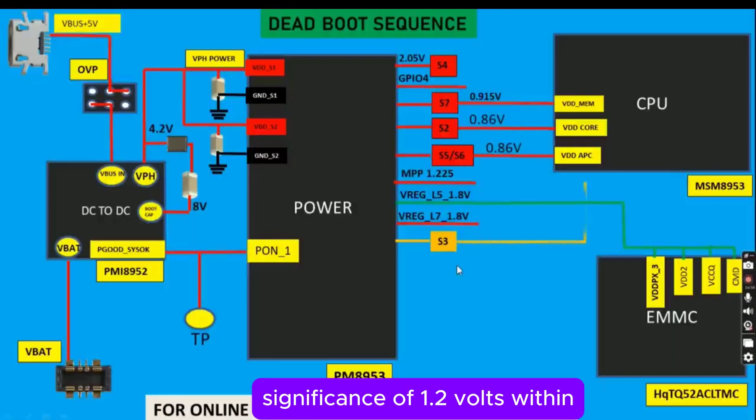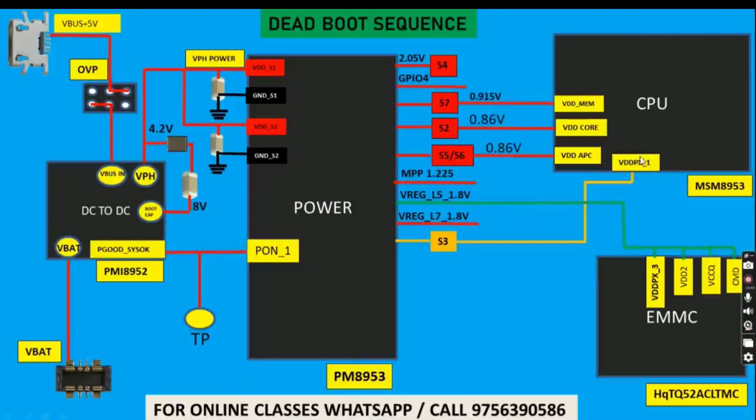A thorough examination of the significance of 1.2 volts within CPU operations is presented, illustrating its critical function in effectively powering multiple components. This voltage is underscored as a fundamental requirement for device operability.